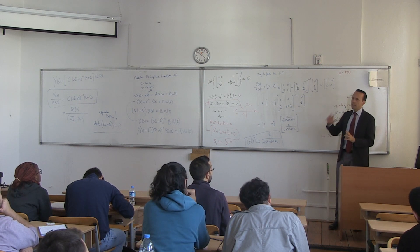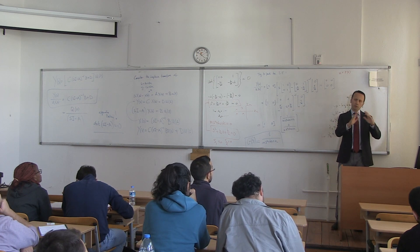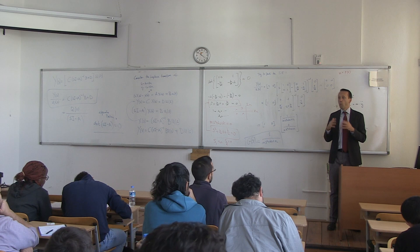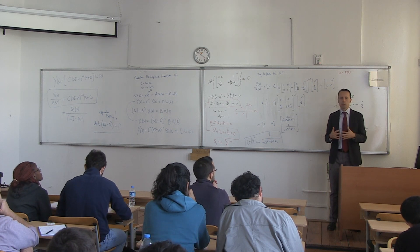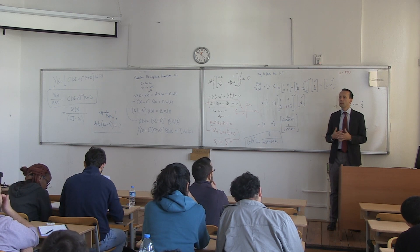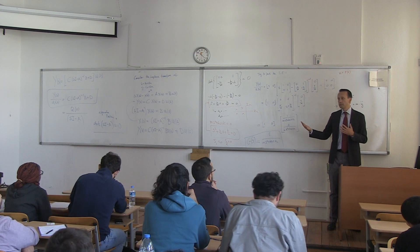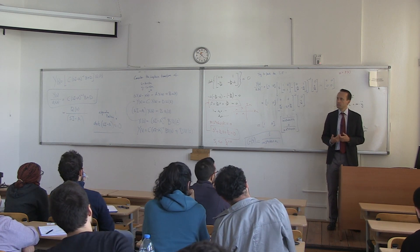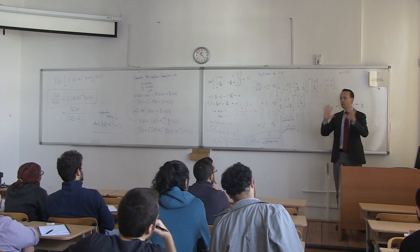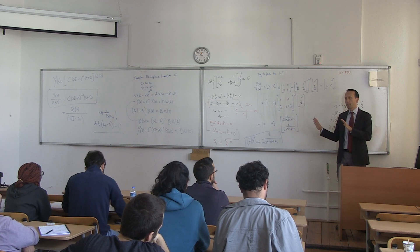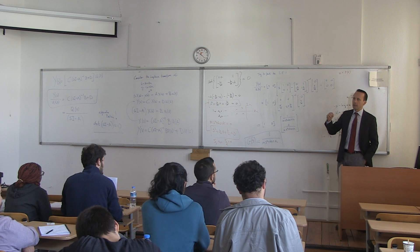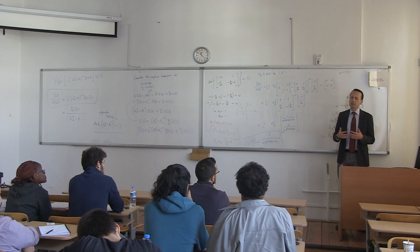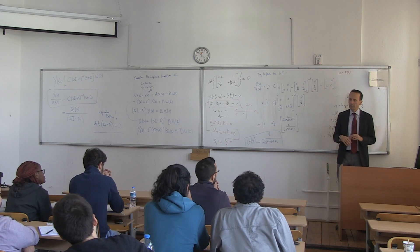When I start with ẋ = Ax + Bu, you need to understand where this comes from — it's a linearization around an equilibrium point. The linear system is different from the single-input single-output transfer function approach, yet there's a clear connection. That's why I'm spending time on this.